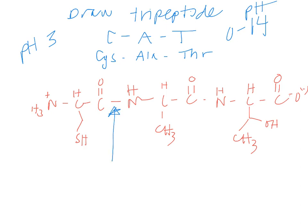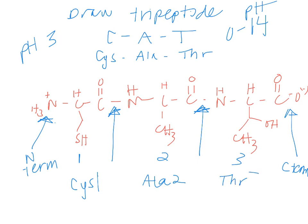That is the tripeptide CAT at pH three. There are two peptide bonds, one here and one here. There's always only one N terminus and only one C terminus in a protein because all the other ones disappeared in the condensation reaction. When we go from left to right, this is residue number one, number two, and number three. You may also see this as Cys1, Ala2, and Thr3.